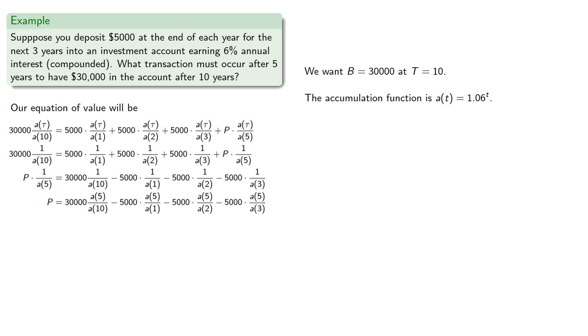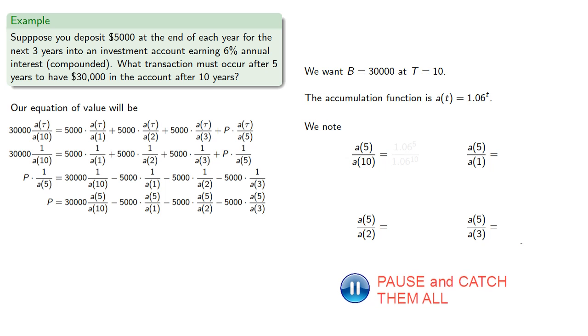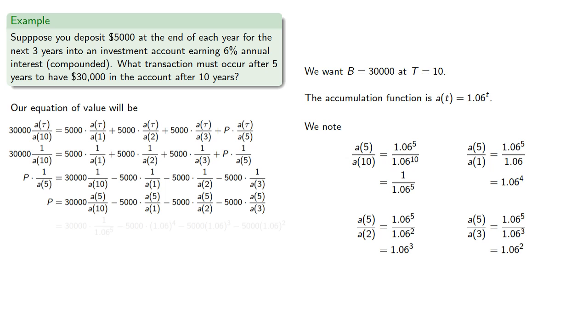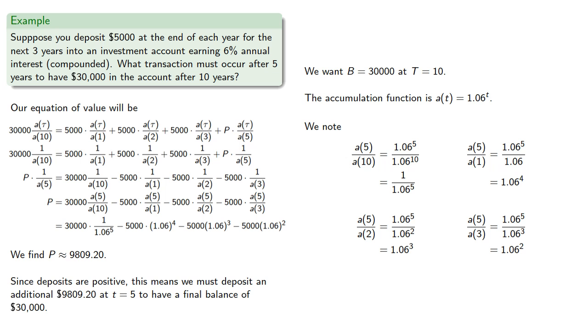And since we know our accumulation function, we note. And we find p is approximately $9,809.20. Since deposits are positive, this means we must deposit an additional $9,809.20 at t equals 5 to have a final balance of $30,000.